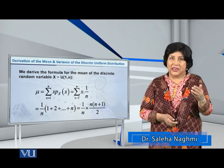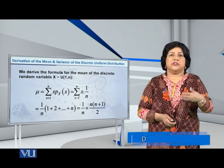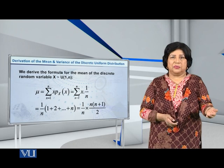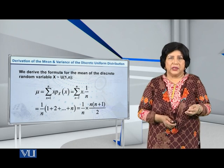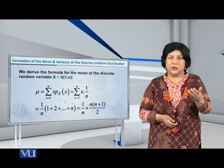The uniform 1,n distribution concept when we have x values as 1, 2, 3, so on up to n and the probability attached with each one of them as 1 over n.